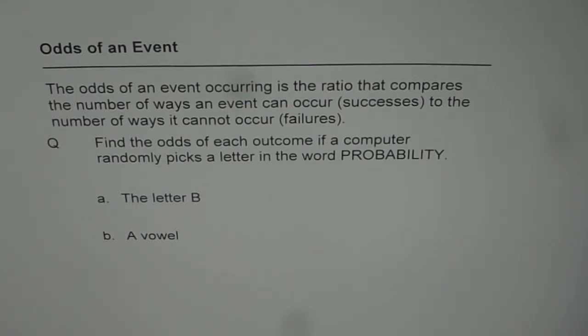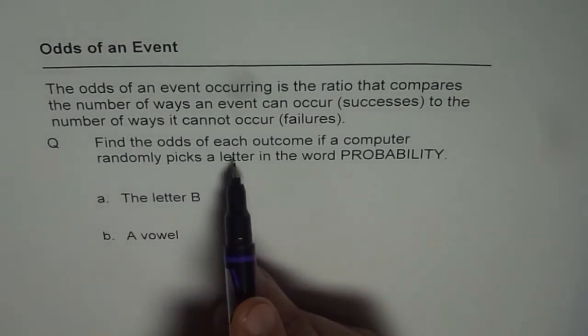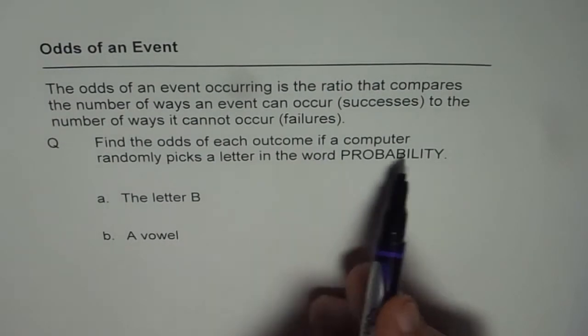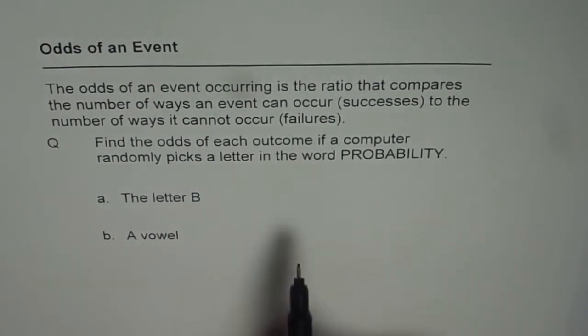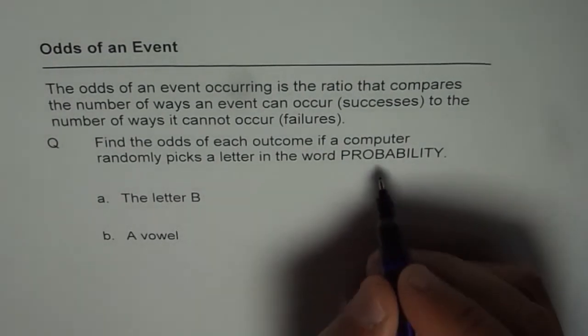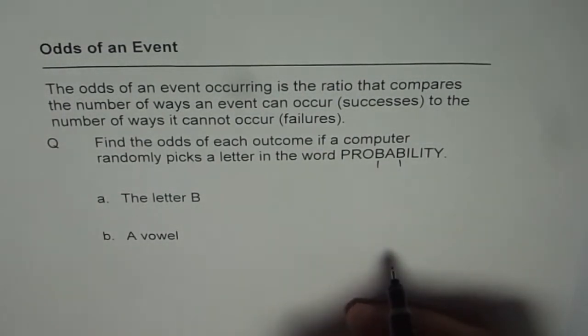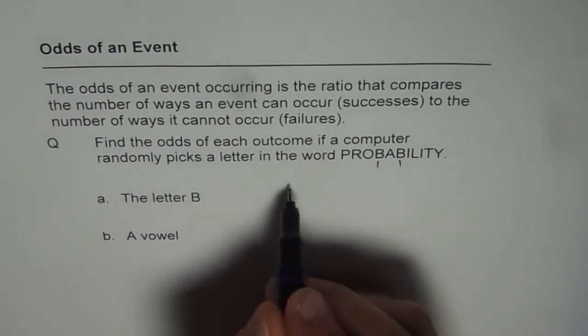Now let us do a question to understand it. The question is, find the odds of each outcome if a computer randomly picks a letter in the word PROBABILITY. The letter B. So how many B's are there? There are just two B's. So successes are two.